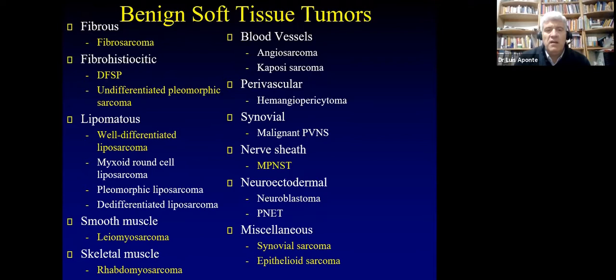We will also discuss the malignant peripheral nerve sheath tumor, synovial sarcoma, and epithelial sarcoma. Regarding soft tissue sarcoma classification, it used to be that superficial versus deep was a risk factor, but now it is just the grade and the size. For soft tissue, the size thresholds are less than five, five to ten, ten to fifteen, and greater than fifteen centimeters.